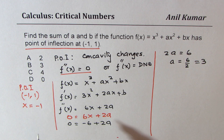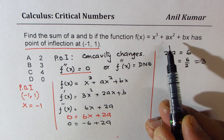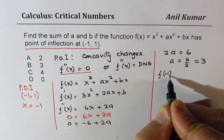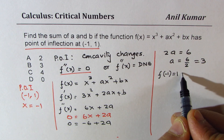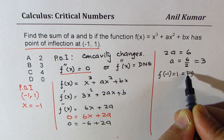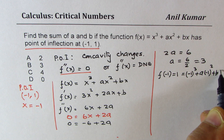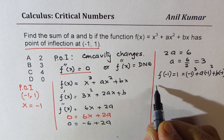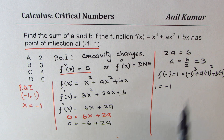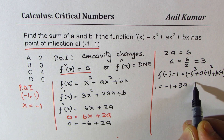Now, how do we find b? To find b, since the point (-1, 1) is on the graph, we know f(-1) equals 1. Substituting -1 into the original function, we get 1 equals (-1) cubed plus a times (-1) squared plus b times (-1), which gives 1 equals -1 plus 3 minus b, since a equals 3.